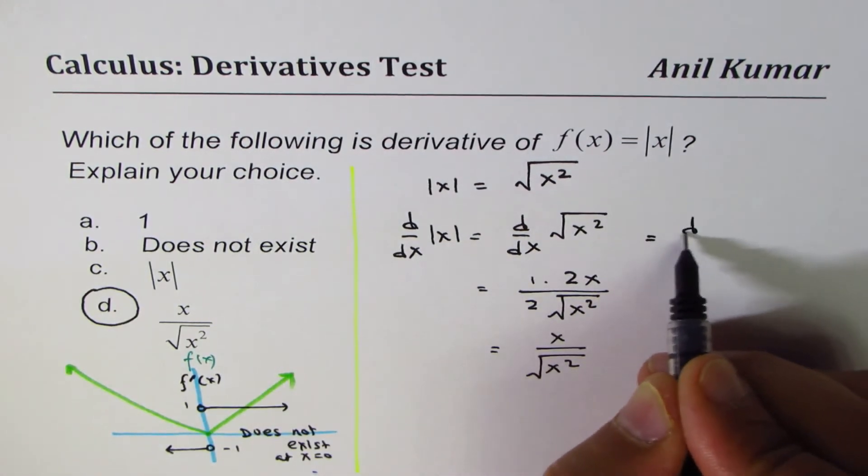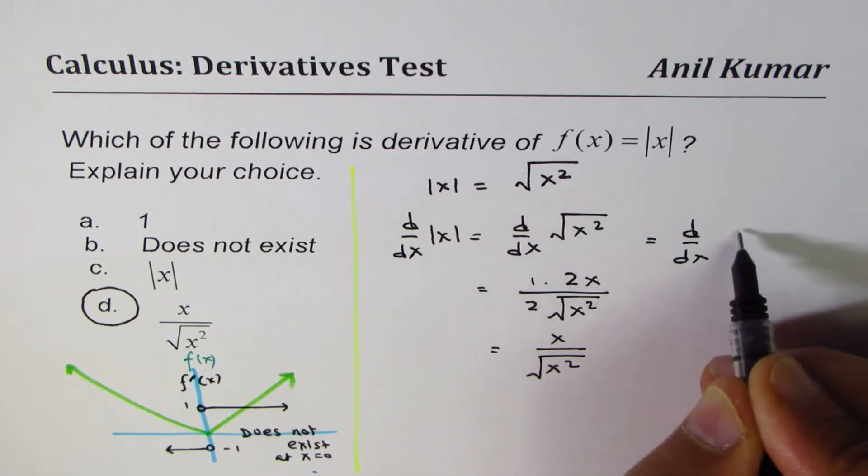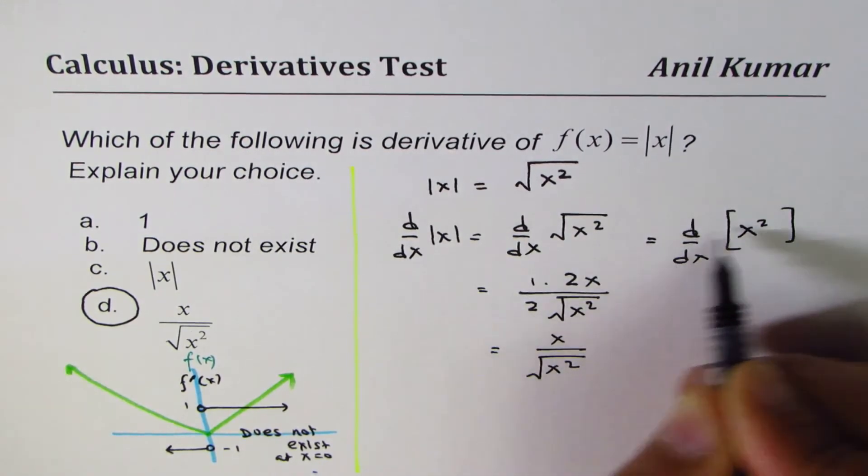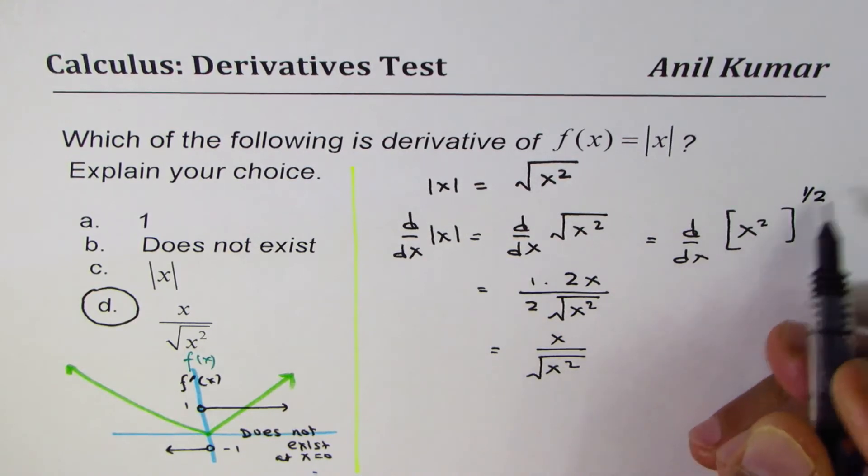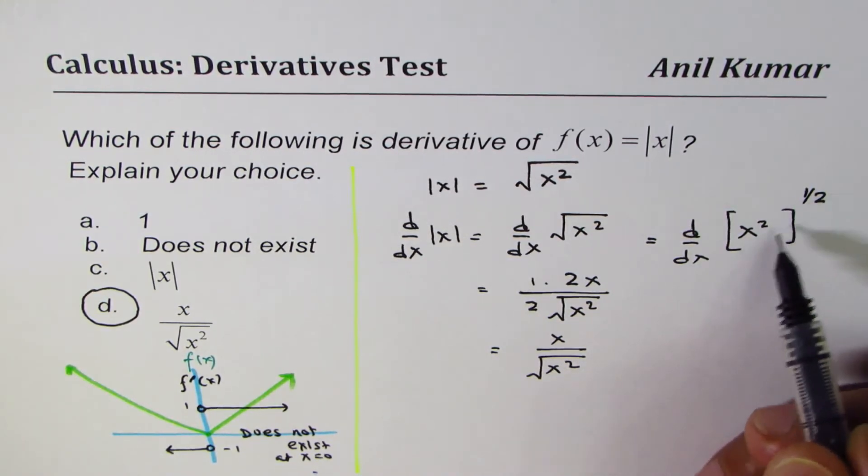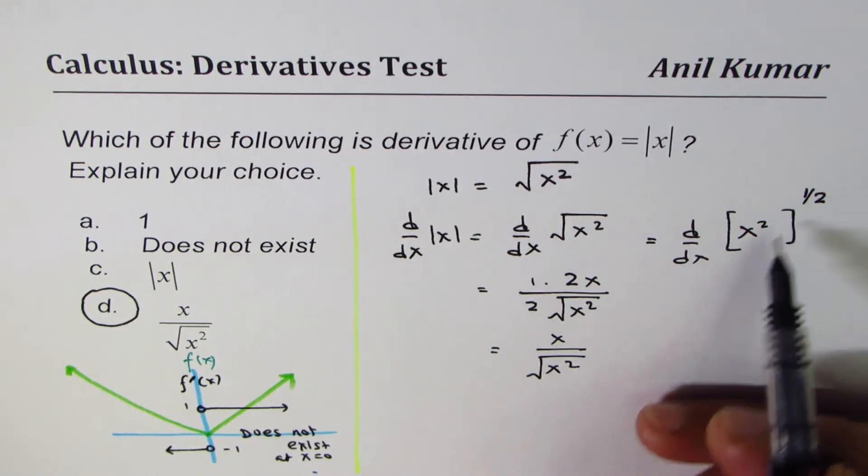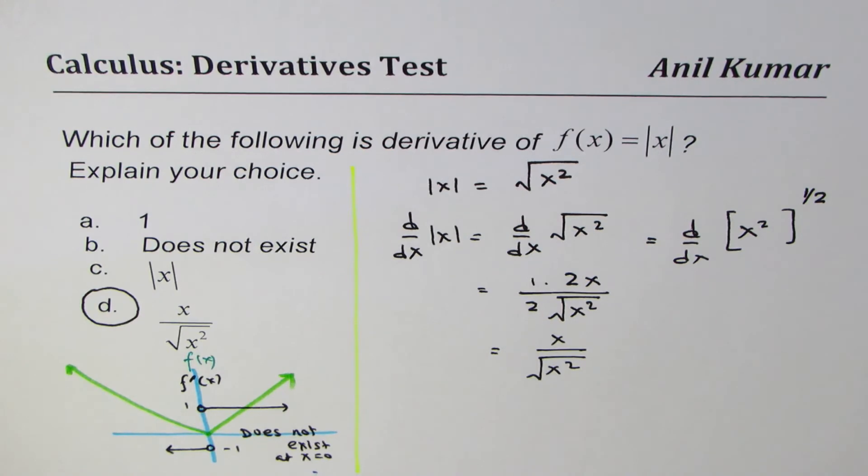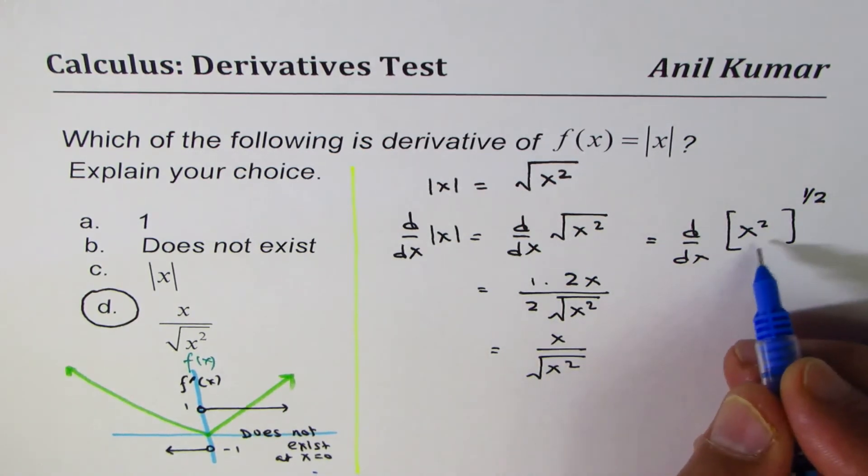You write this function as d/dx of x squared to the power of half. I purposely did not write because you may get into an idea of canceling these powers. Don't do that. Use the power rule and the chain rule.